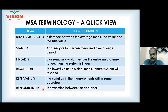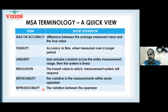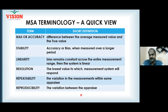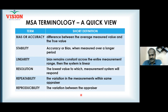Reproducibility error occurs when the same part is measured by two different appraisers and they get different readings — for example, one says 101 mm and another says 102 mm. That disagreement is reproducibility error: the variation between appraisers where one cannot reproduce the other's reading. We will understand each of these in detail one by one.